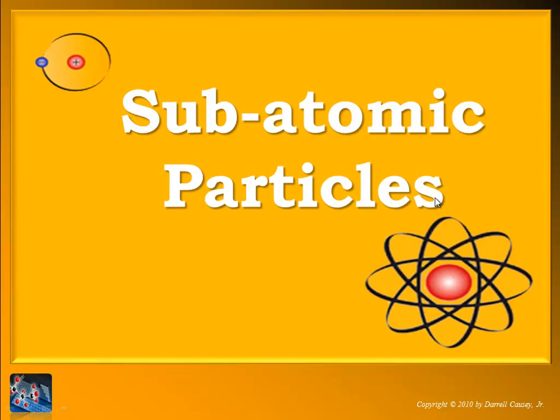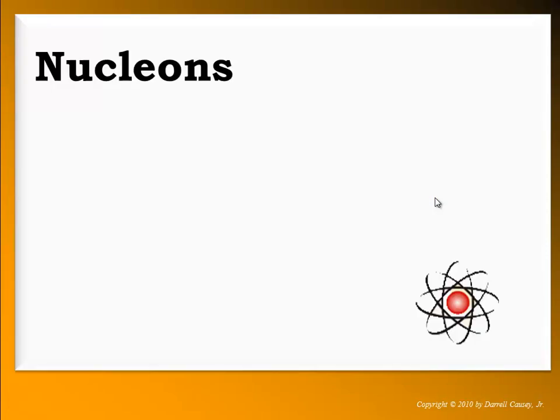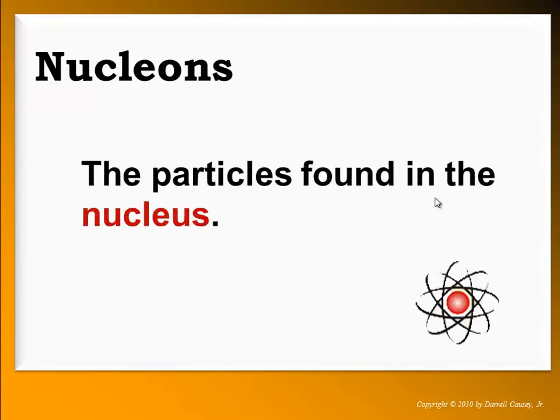We've talked about the electron, the atom, the nucleus, and the Rutherford model. Now let's talk about the subatomic particles that are in the nucleus. These are called nucleons — particles found in the nucleus. There are two particles found in the nucleus: the proton and the neutron.